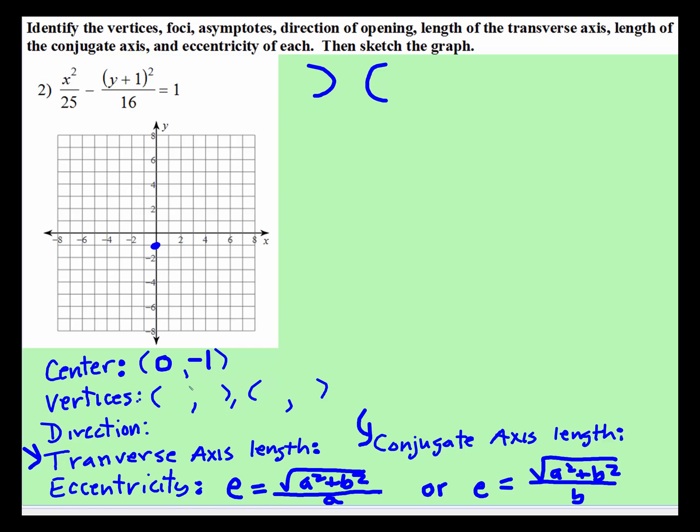And then again, to find the vertices, a is under the x, the square root of 25 is 5, the square root of 16 is 4. So on the x-axis direction, we're going to go over 5 both ways, both left and right. And so for those vertices, we're going to have negative 5, 0, and positive 5, 0.